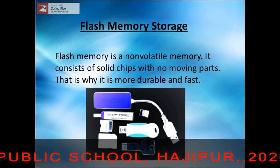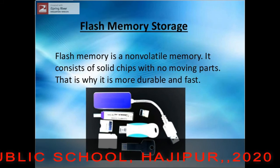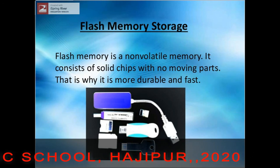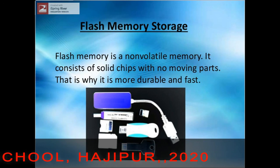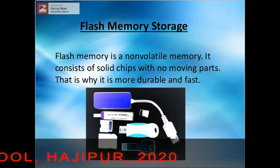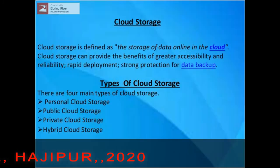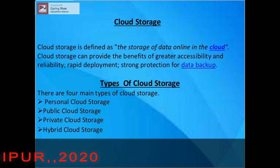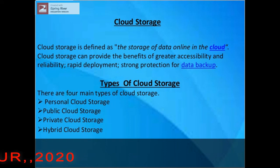Flash memory drive or pen drive is a small portable device that stores a very large amount of data. It is more durable and fast. Cloud storage is a service used for storing data online.